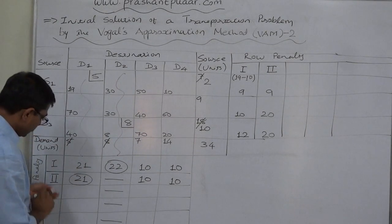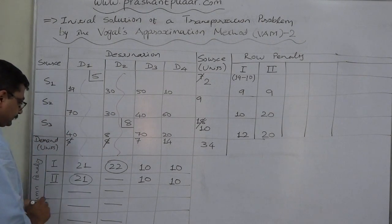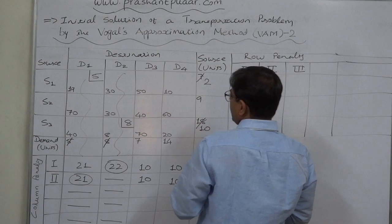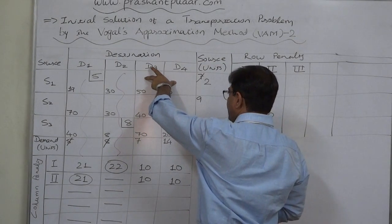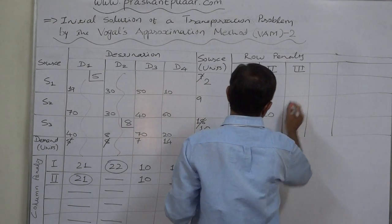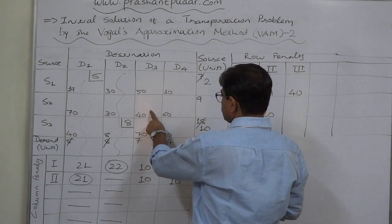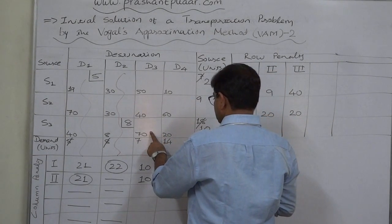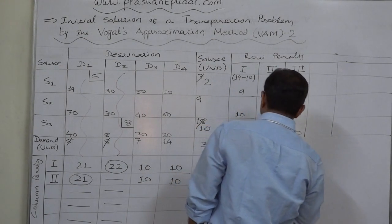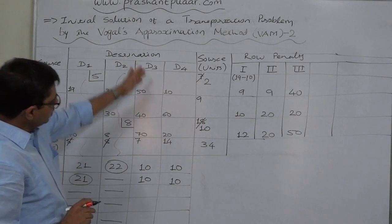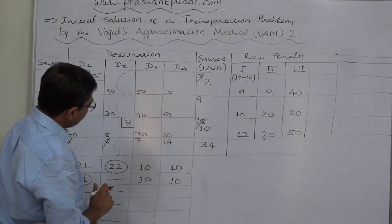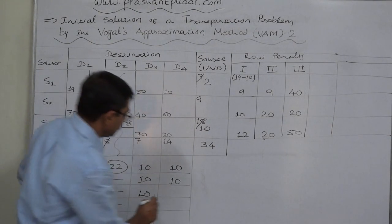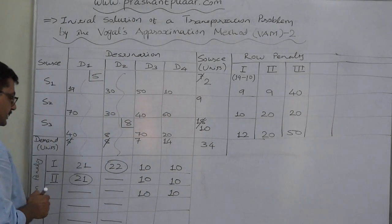Third trial for the remaining table. In row S1, the least cost is 10 and immediate higher is 50, so the penalty is 40. In row S2, the least cost is 40 and immediate higher is 60, so the penalty is 20. In row S3, the least cost is 20 and immediate higher is 70, so the penalty is 50. For open column D3, the least cost is 40 and immediate higher is 50, so the penalty is 10. For column D4, the least cost is 10 and immediate higher is 20, so the penalty is 10. The highest penalty is 50.